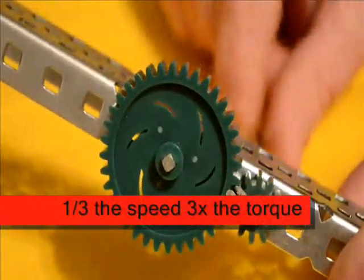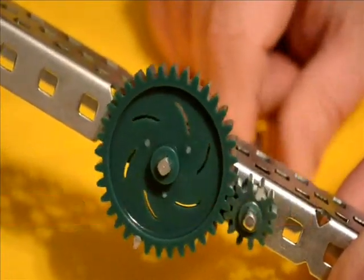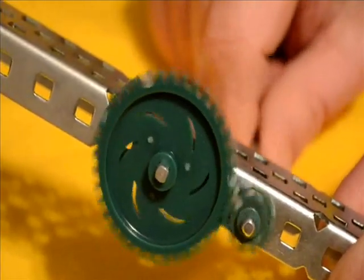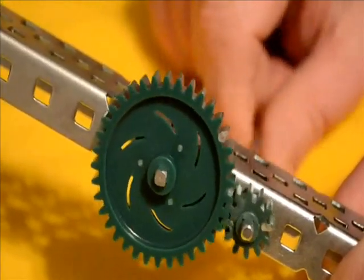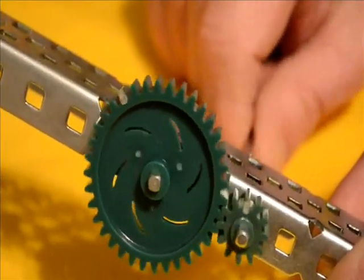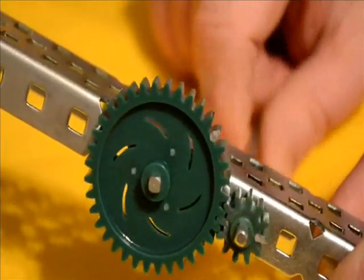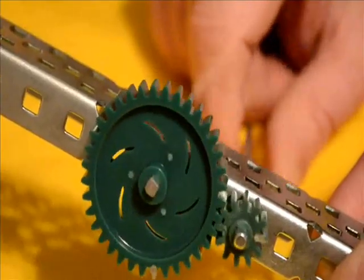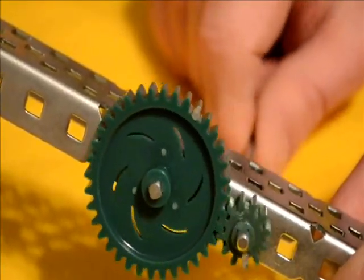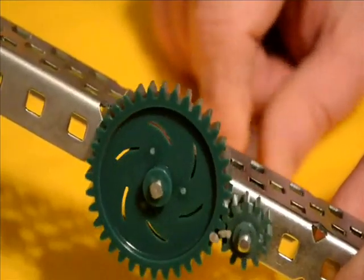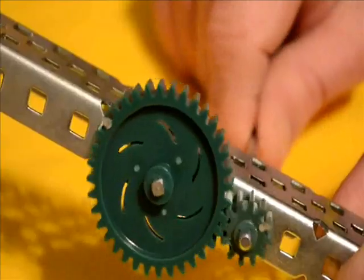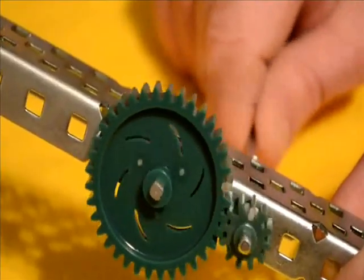You will notice in the three-to-one gear ratio, the 12-tooth gear which is the driving gear goes around three times as fast as the 36-tooth gear which is the driven gear. That means anything which is attached to the driven shaft will receive three times the amount of torque that is being applied to the driving shaft.